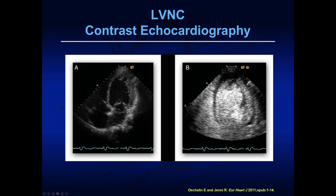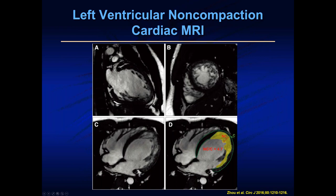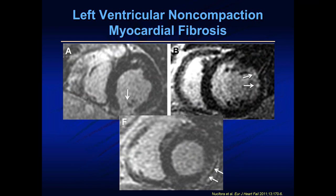Sometimes we can't see the pictures well enough, so we give contrast agents to better depict the finger-like processes. A patient given an intravenous contrast agent shows those big finger-like processes jutting out, confirming the diagnosis. We can also use cardiac MRI to better understand what LVNC looks like, and we can measure the non-compacted to compacted ratio — here about 4.7 to 1, meaning this layer is about 4.7 times thicker than the compacted layer. MRI gives wonderful pictures and accurate delineation of where non-compaction is occurring.